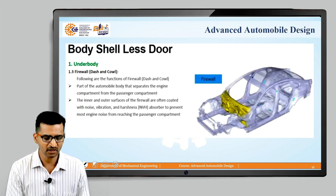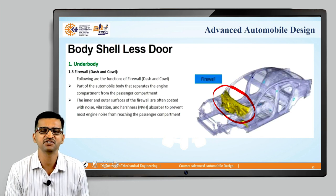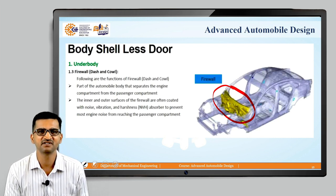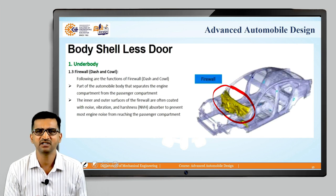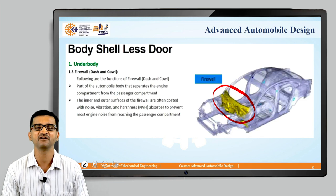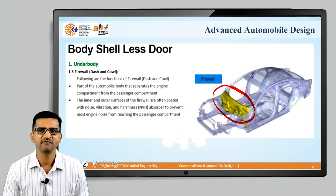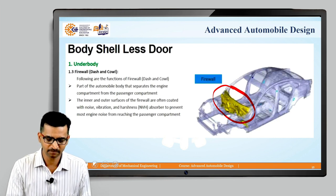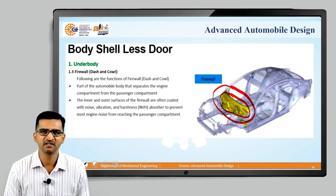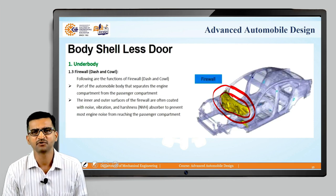This is the front underbody front structure, and this is the firewall — the member which separates the engine compartment from the passenger cabin. The main important function is to avoid transmission of engine heat and engine vibrations into the passenger compartment. Without this member, hot gases and vibrations from the engine would directly reach the passenger compartment, which would not be comfortable. This member also absorbs noise and vibrations coming from the engine. Car companies apply a coat of insulating material — you must have seen in your car a black fabric mat fitted here that acts as an absorbing material for vibrations and heat.